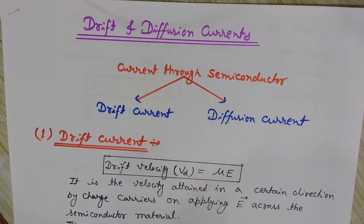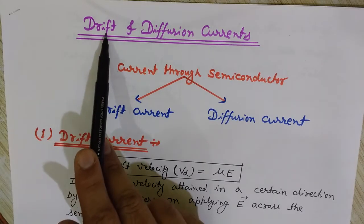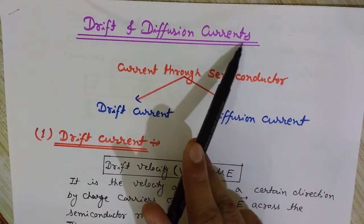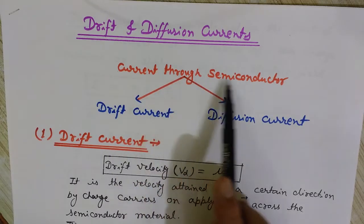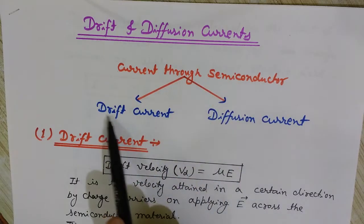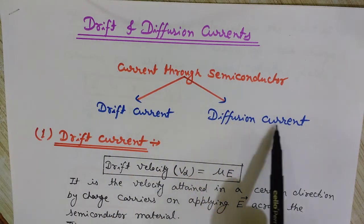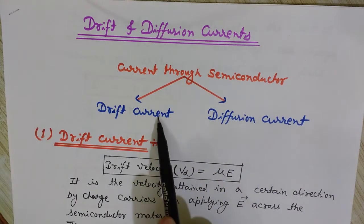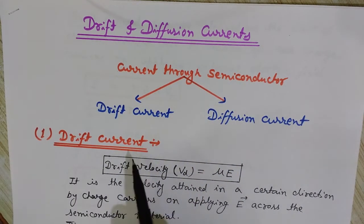Hi friends, I am Lalith Vasis and you are watching Engineering Made Easy. Today we will understand what is drift and diffusion current in case of semiconductors. Two types of currents flow: first is the drift current and the second one is the diffusion current. We will understand both drift and diffusion, so first we start with the drift current.